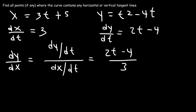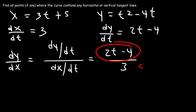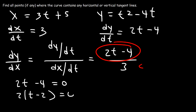Notice that the denominator will never be zero because there's no t variable in the bottom of the fraction. So therefore, there are not going to be any vertical tangent lines in this example. The numerator can equal zero, so let's set 2t minus 4 equal to zero. We can see that when t is equal to 2, there's going to be a horizontal tangent line.